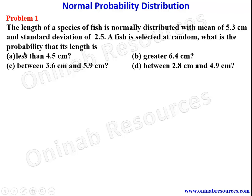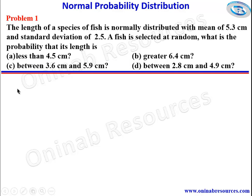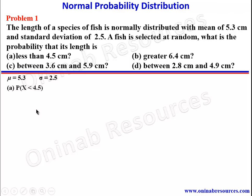So we look at the parameters we are given: the mean is 5.3 and the standard deviation is 2.5. Starting from part (a), we are looking for the probability of x less than 4.5. It is always advisable to represent this information on the probability distribution curve.